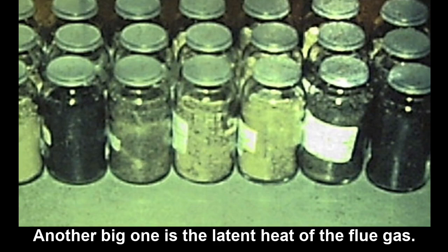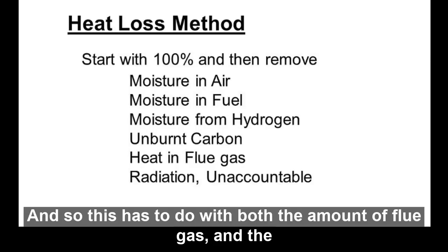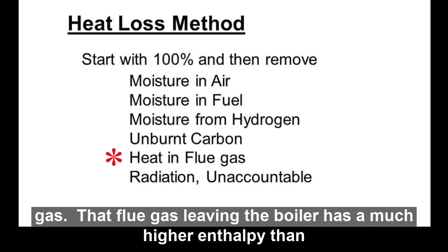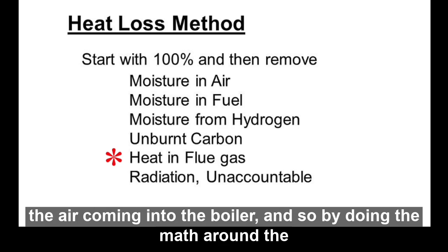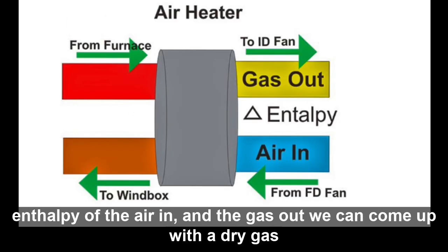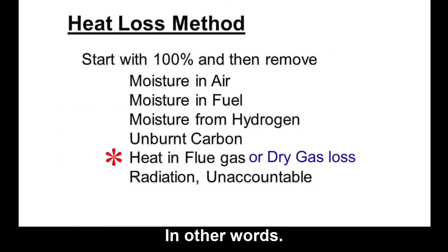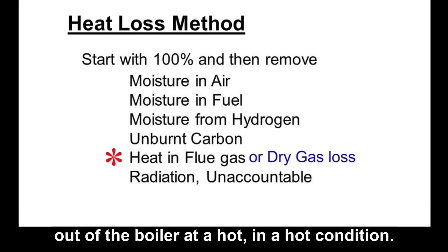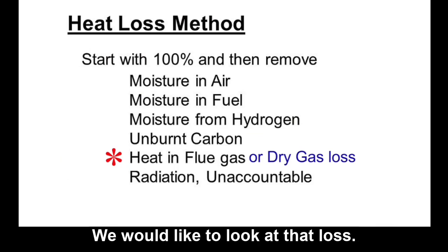Another big loss is the sensible heat of the flue gas. This relates to both the amount of flue gas and the temperature of the flue gas — essentially the enthalpy. The flue gas leaving the boiler has a much higher enthalpy than the air coming in. By doing the math around the enthalpy of air in and gas out, we can derive a dry gas loss: we heated up a bunch of nitrogen in the air, and now we're sending it out of the boiler in a hot condition.